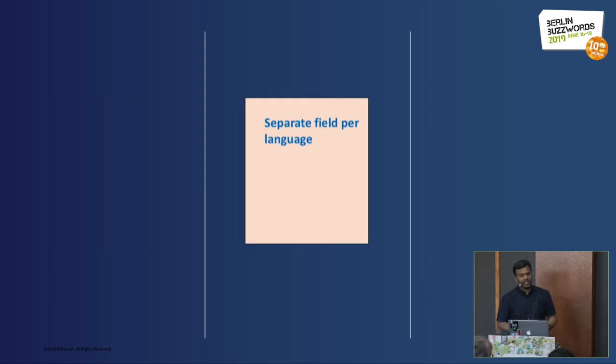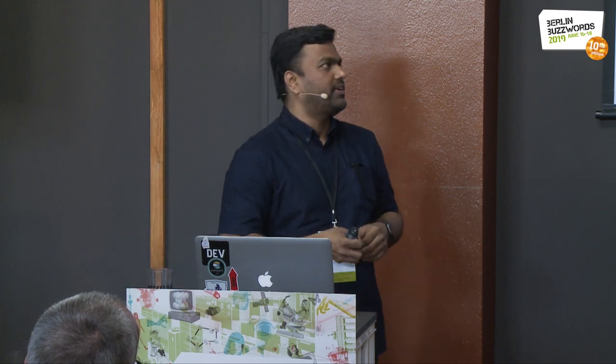The second approach is a separate field per language. For every language, you create a separate field — for example, 'English content', 'German content', 'French content', and so on. The problem with this approach is that if you want to add support for Italian tomorrow, you have to change your index schema, add a new field, and re-index all your documents. That's very hard for systems with large data. It could be easier where indexes are small and volatile, but it adds overhead of extra fields during both indexing and querying.